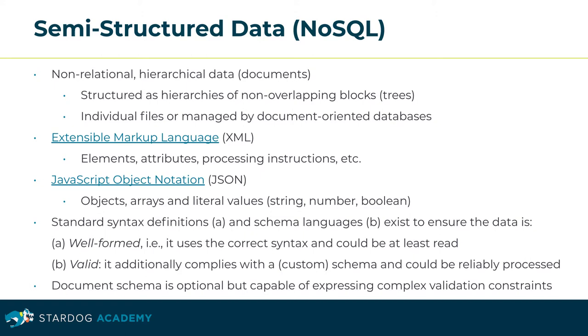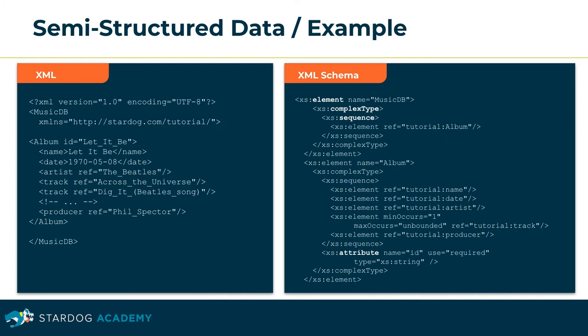Additionally, a document is valid if its content complies with the structure rules of an associated schema, so it could reliably be processed by a schema-aware application. Though optional, a schema is sufficient to express complex validation constraints on documents. The XML document on the left encodes album data as a tree of elements and attributes. The XML schema on the right defines the valid document structure such as the sequence and cardinality of elements or data types of attributes.